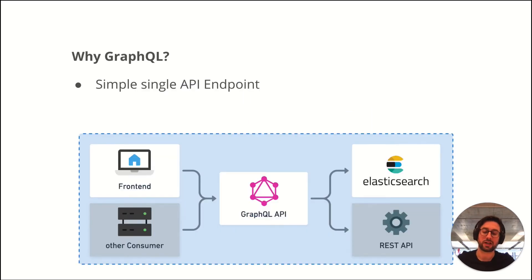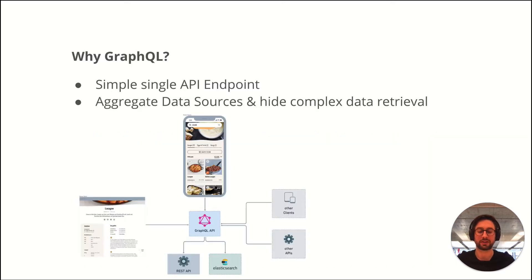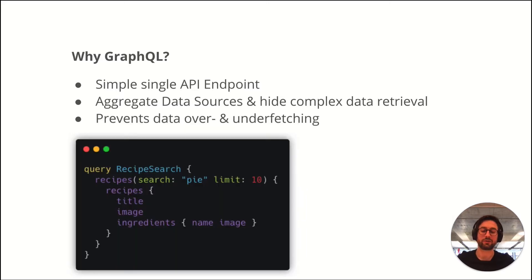This is where GraphQL comes into play. It serves as a single API endpoint for all your frontends and hides all complex data structure logic. The use of GraphQL prevents over- or under-fetching by only delivering the data fields which are needed and requested by the client.